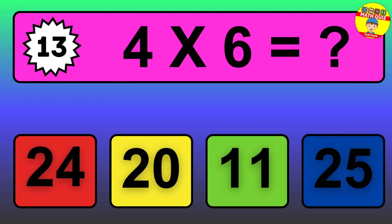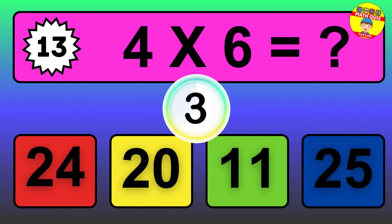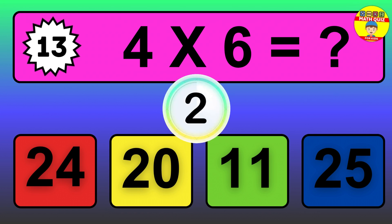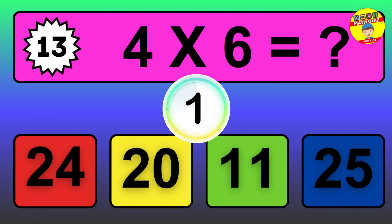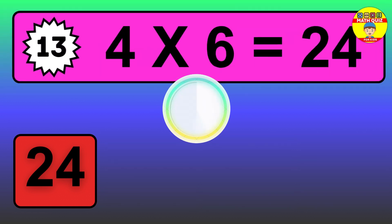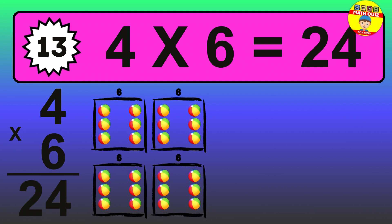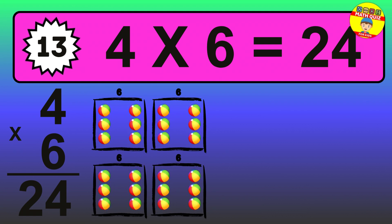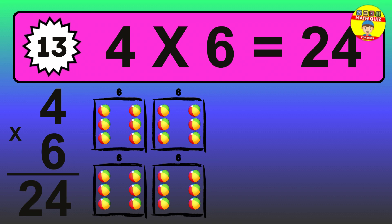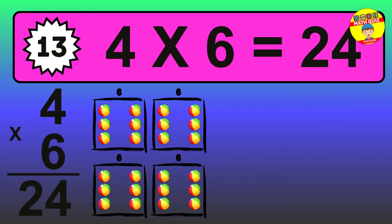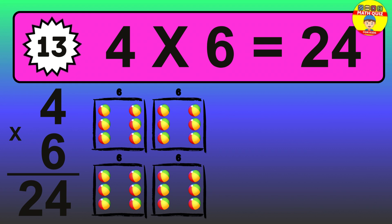Question 13. 4 times 6 equals what? The answer is 4 times 6 is 24. To calculate, we have 4 groups with 6 balls each one. So, how many balls do we have? 24 balls.